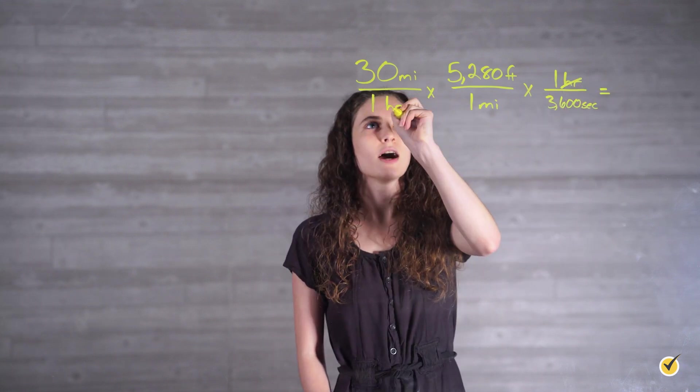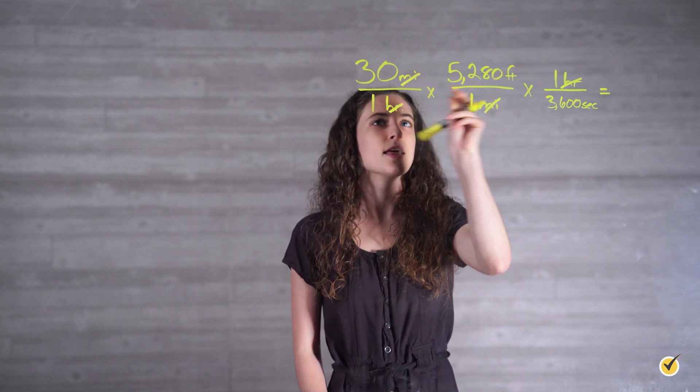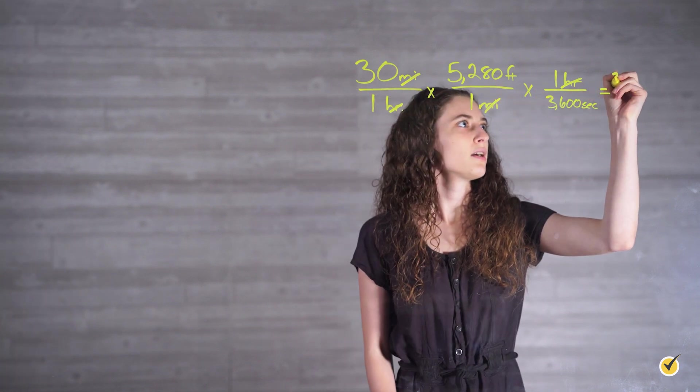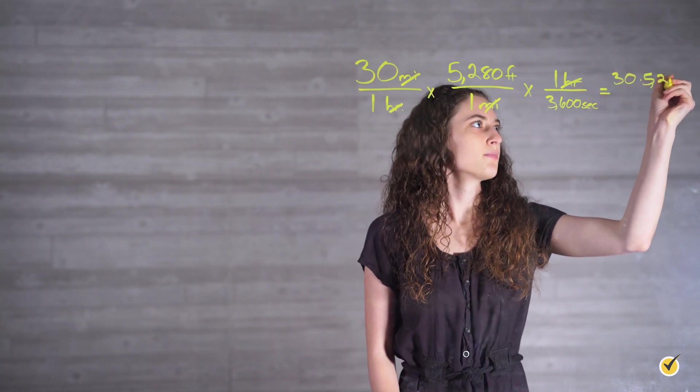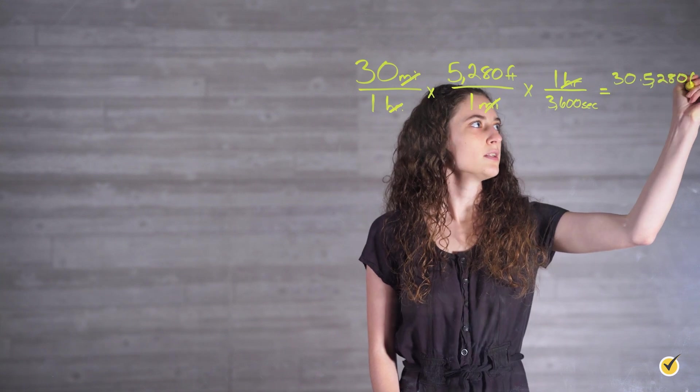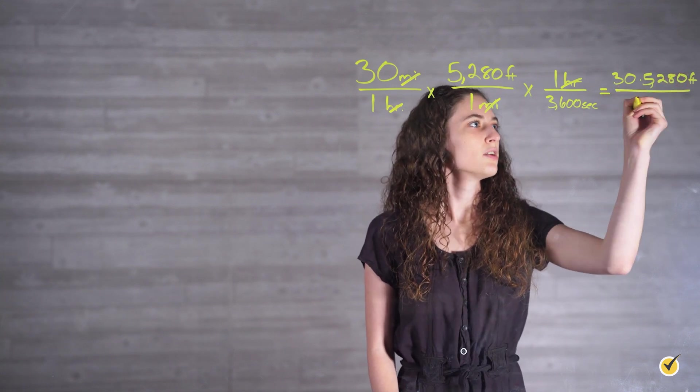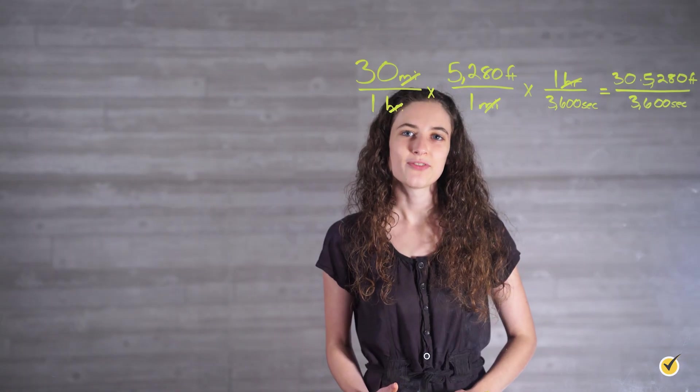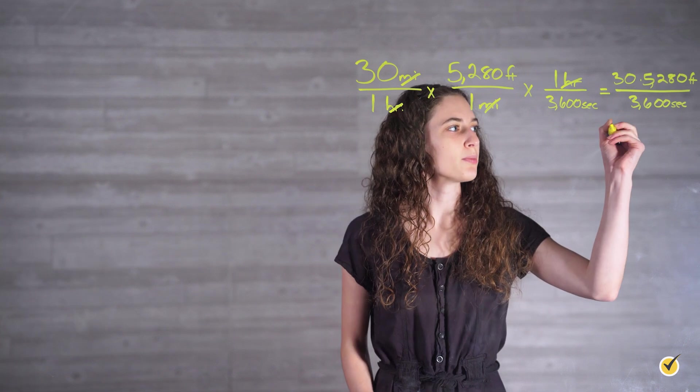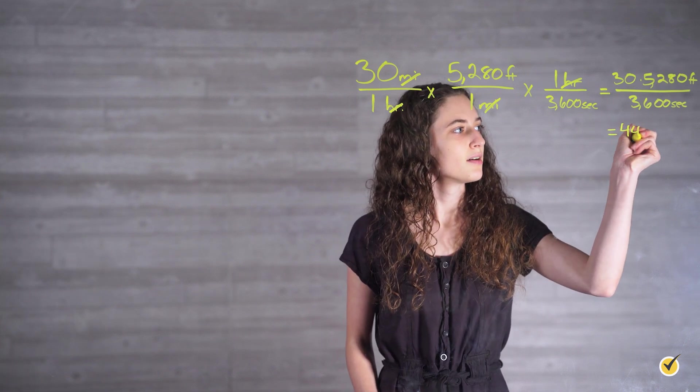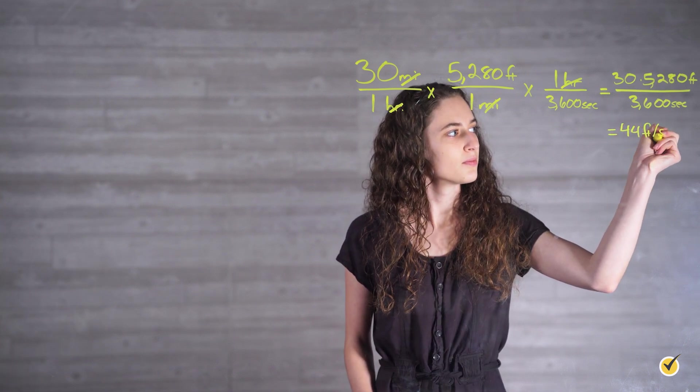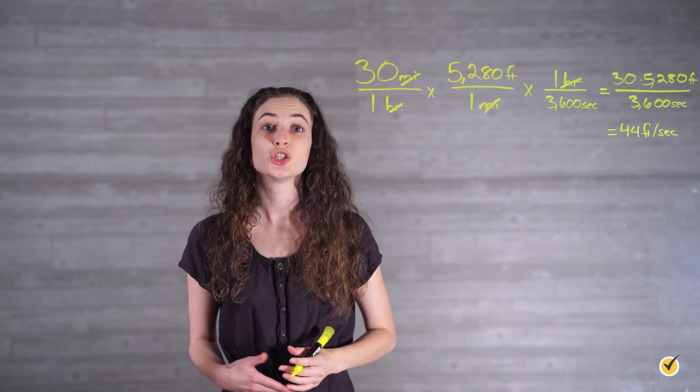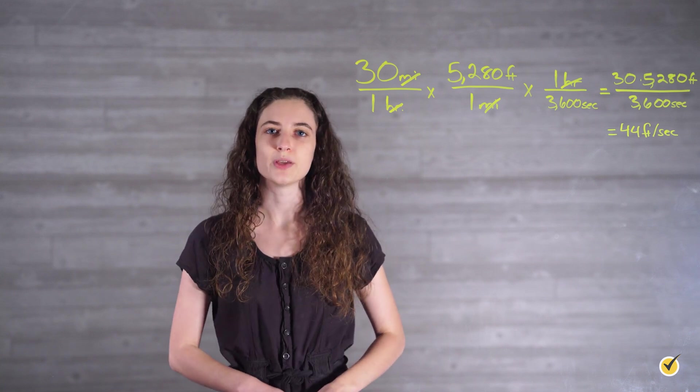So when we multiply through, our hours cancel out, our miles cancel out, and then we can just multiply across. So we have 30 times 5,280 feet over 3,600 seconds. When we simplify, this gives us 44 feet per second. If Sarah is traveling 30 miles per hour, she is also traveling 44 feet per second.